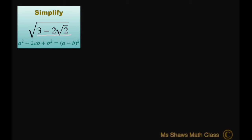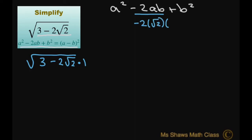So what I can do is I'm looking at this formula here, your perfect square trinomials. We have a squared minus 2ab plus b squared. So the technique we want to use is this. We have the square root of 3 minus 2 square root of 2. Now I'm going to multiply this by 1 here and let that be my negative 2ab. So basically I have negative 2 square root of 2 times 1.